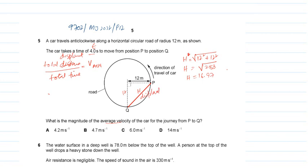According to this, average velocity will be total displacement which is 16.97 and total time which is 4 seconds. Divide this value with 4, you will get 4.24.